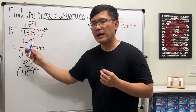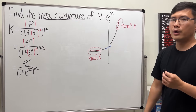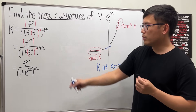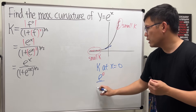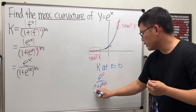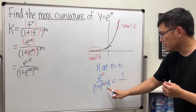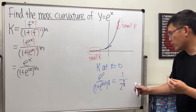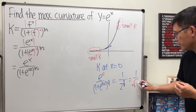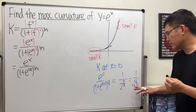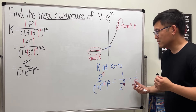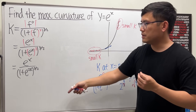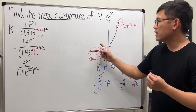So now we have a formula to find the curvature at any x value. If you want the curvature at x equal to 0, just plug in 0: we get e to the 0 over 1 plus e to the 0, raised to the 3/2 power, which is 1 over 2 to the 3/2, or 1 over the square root of 8. It's quite small. Also, as x approaches negative infinity, the numerator approaches 0, which is why we said we'll have small curvature there.